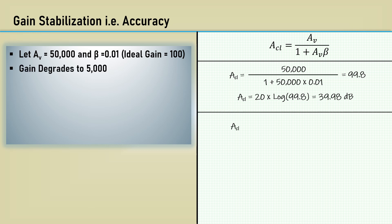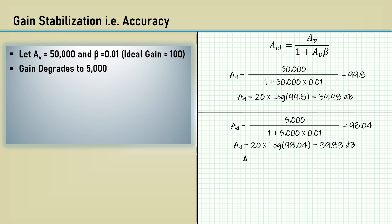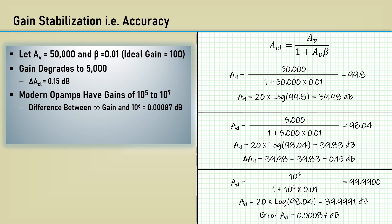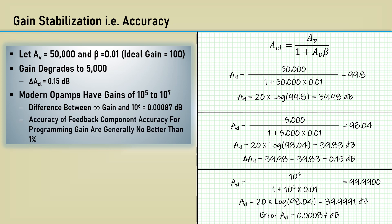Now let's see what happens if the open loop gain degrades to 5,000. This results in a gain of 98.04, which is only 0.15 dB of gain reduction — hardly noticeable. Modern day op-amps have open loop gains in the range of 10 to the fifth or 10 to the seventh. Assuming an open loop gain of 10 to the sixth, the difference between the actual gain and the ideal infinite-gain abstraction is completely negligible, with only a 0.00087 dB error. Also, resistors in the feedback network will generally only have a tolerance accuracy of 1%, so resistor tolerance will result in a bigger gain variation than the error from the infinite gain assumption.